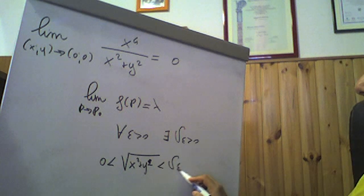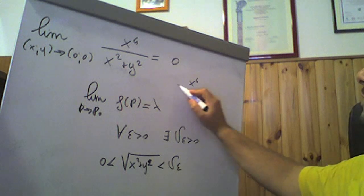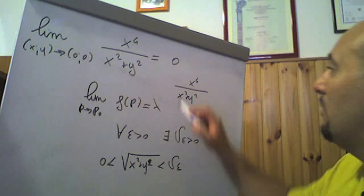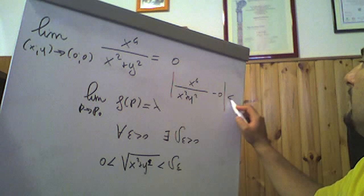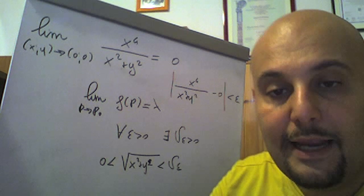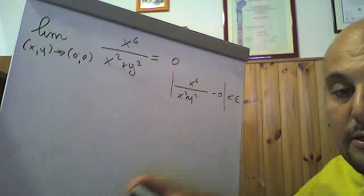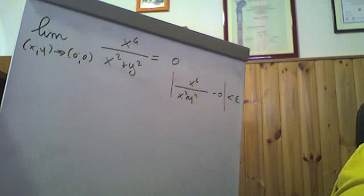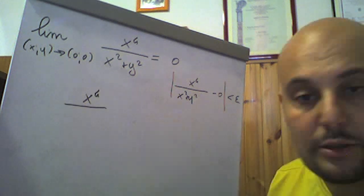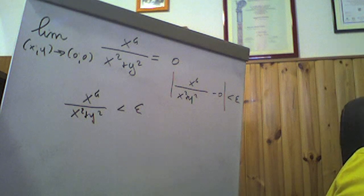Quindi, dobbiamo provare che x⁴/(x⁴+y²), in valore assoluto meno 0, sia minore di epsilon. Poiché la funzione ha numeratore e denominatore positivi, possiamo togliere il modulo e dobbiamo semplicemente dimostrare che x⁴/(x⁴+y²) sia minore di epsilon.